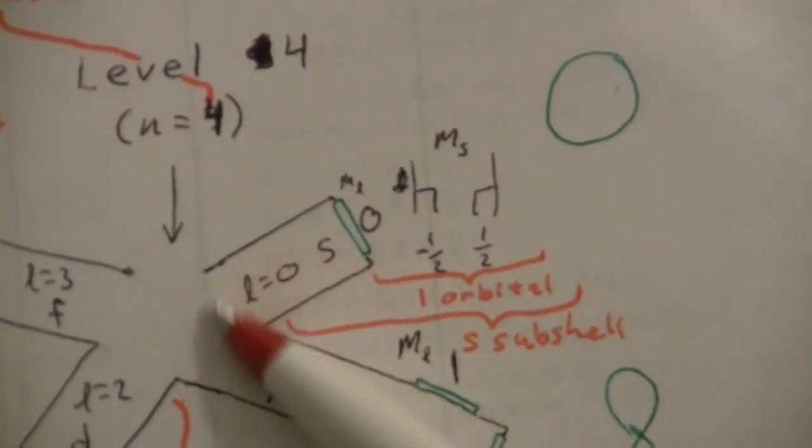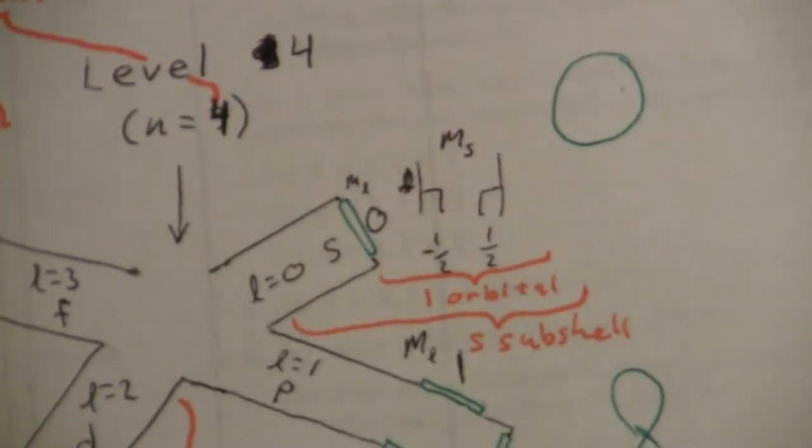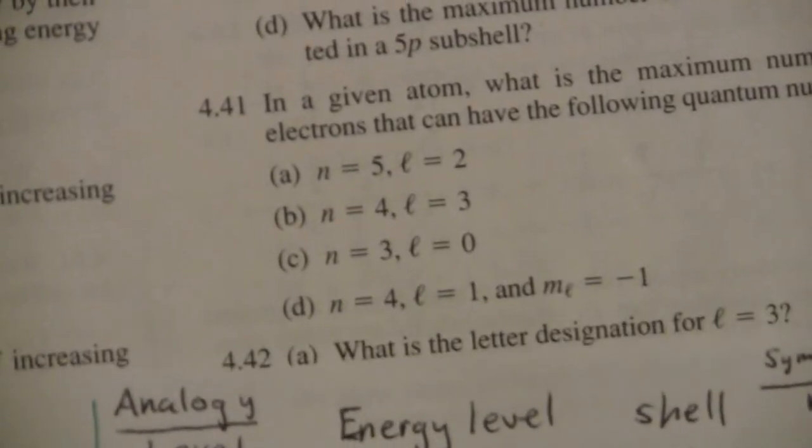Alright, so even at a high level, the s wing has only that one door with its two electrons.